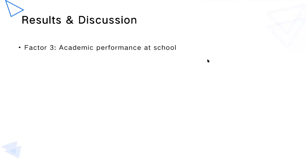The third factor is academic performance at school. The result shows that students who achieve a higher GPA are found to have higher career maturity. In most cases, GPA is related to the ability to learn, so students with better learning ability are believed to have higher career maturity. When it is easier for students to learn, they are more likely to develop interest in the subjects they study and therefore develop further interest in a field and possible future careers.